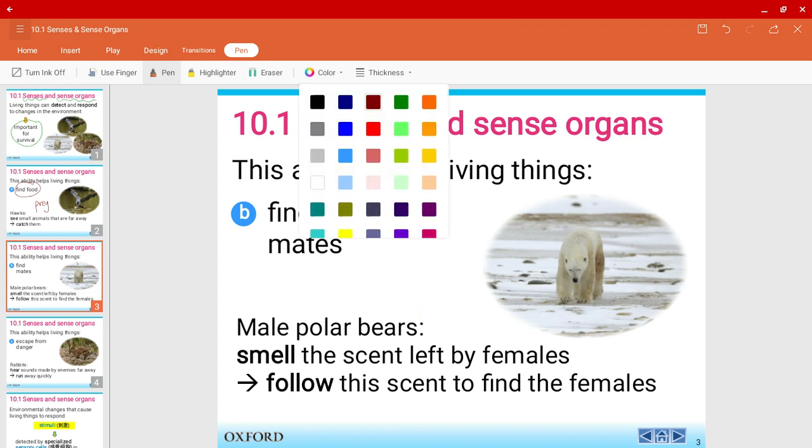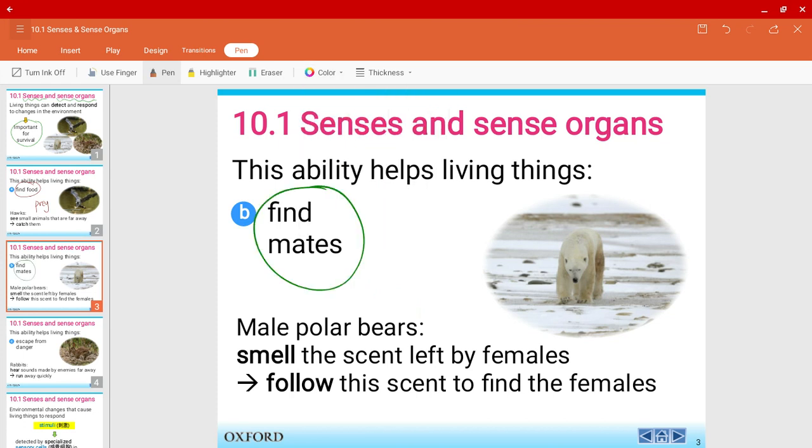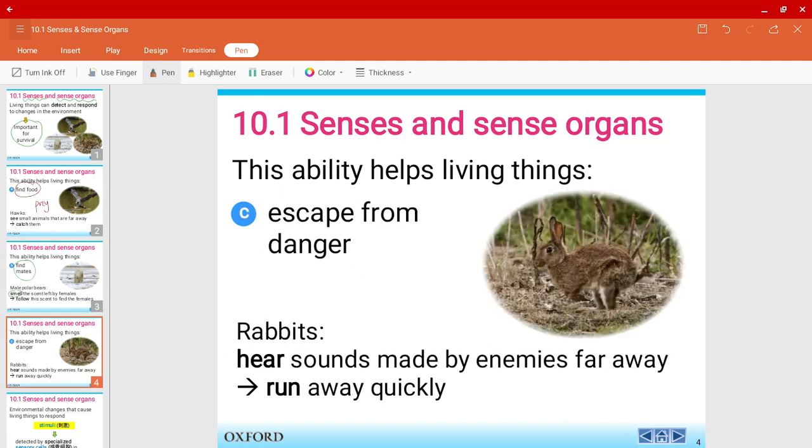Some living things can also find mates—mates as in not really friends but partners or a couple. For example, male polar bears can smell the scent of other female polar bears, and this will give them the ability to find mates. Another example is how rabbits can escape from danger. They hear the sounds made by their enemies and they can run away very quickly.